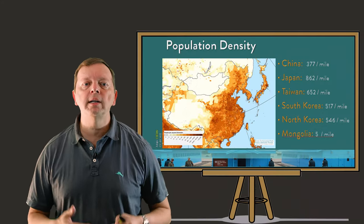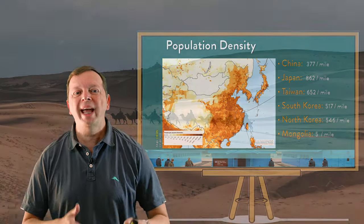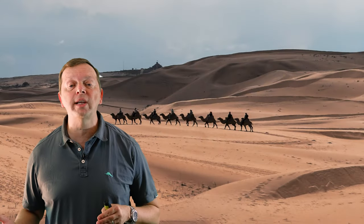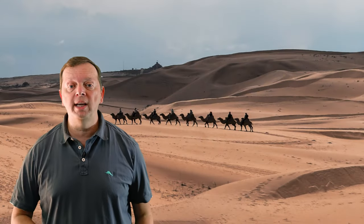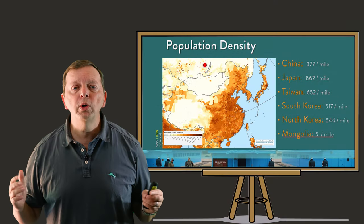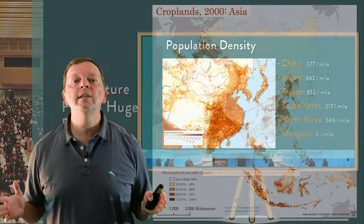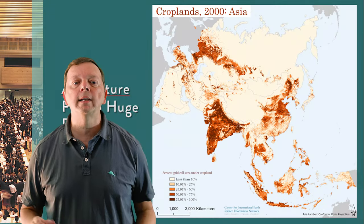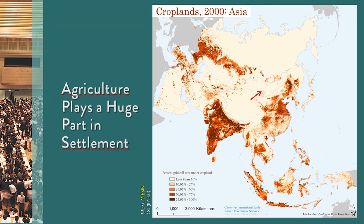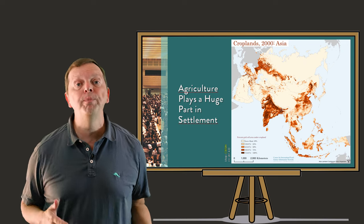There are several reasons for this. Being landlocked in the center of Asia means that Mongolia couldn't be settled by ocean travelers. The Gobi Desert to the south further isolates it from anyone from the ocean, and to the north is eastern Russia, which is sparsely populated as well. Perhaps the biggest reason is that the terrain and climate are not good for farming. As this map shows, extremely little land is farmed in Mongolia.